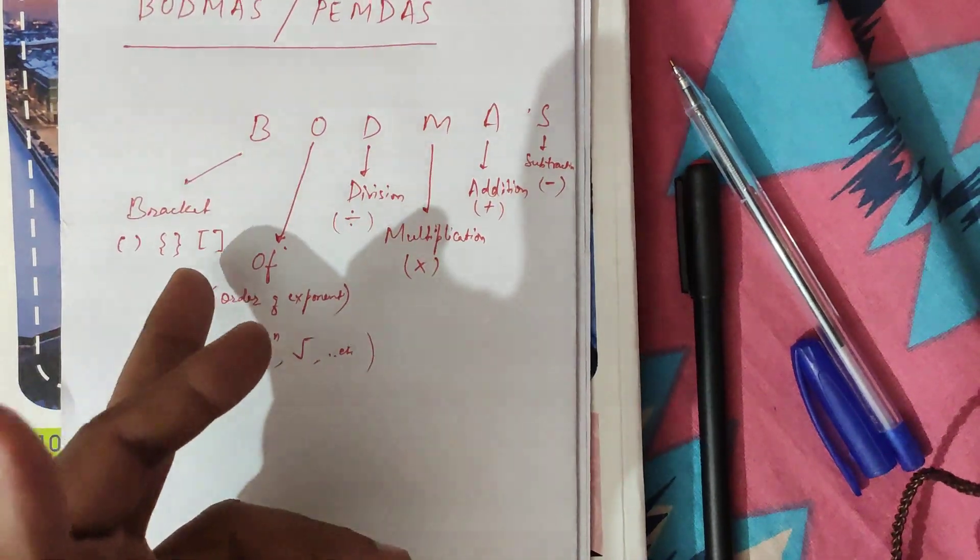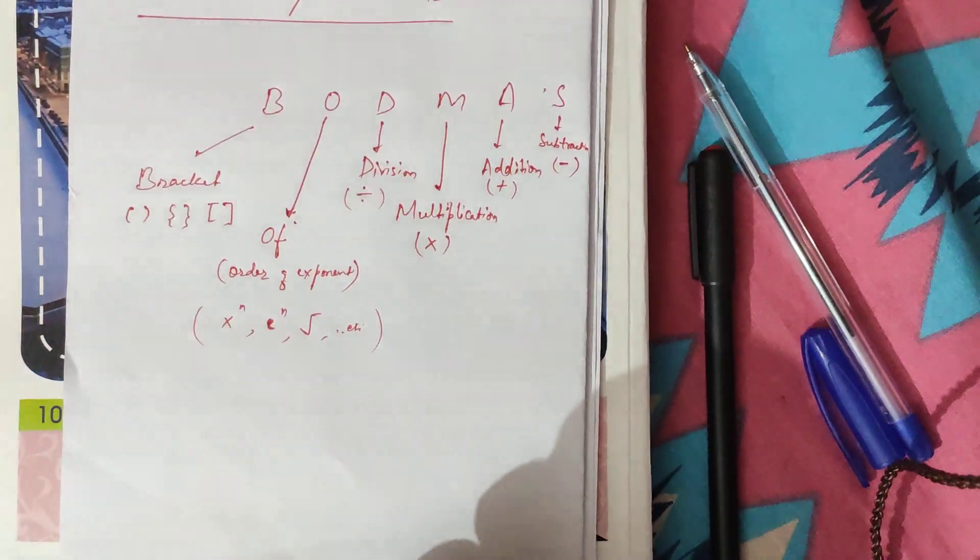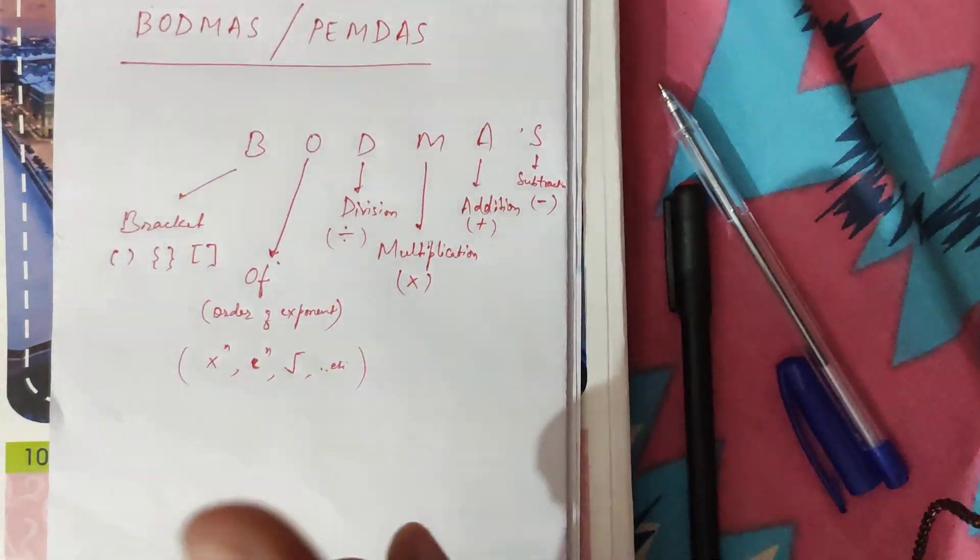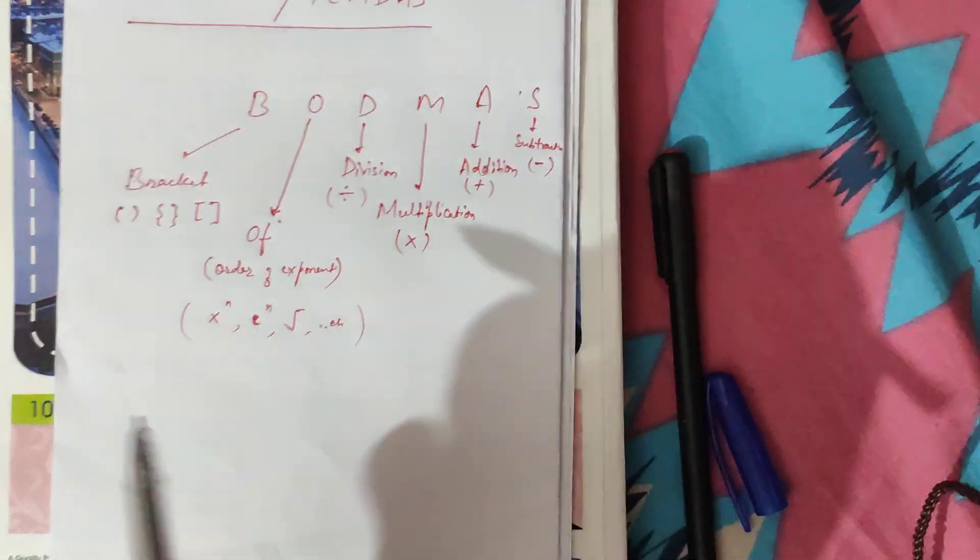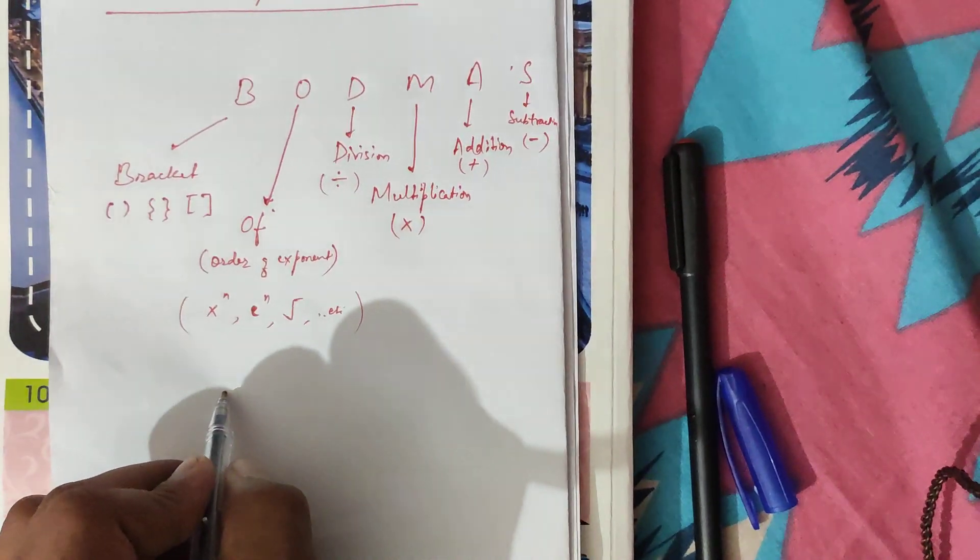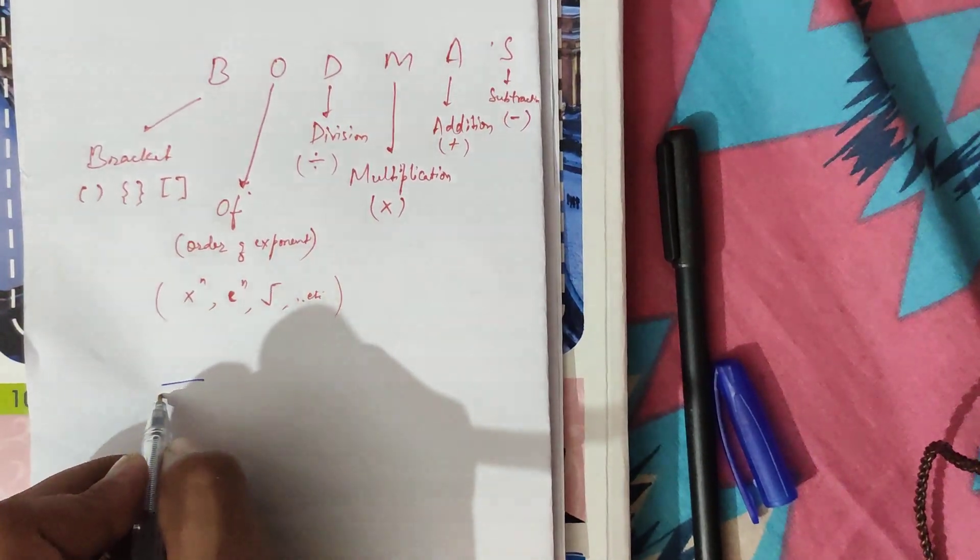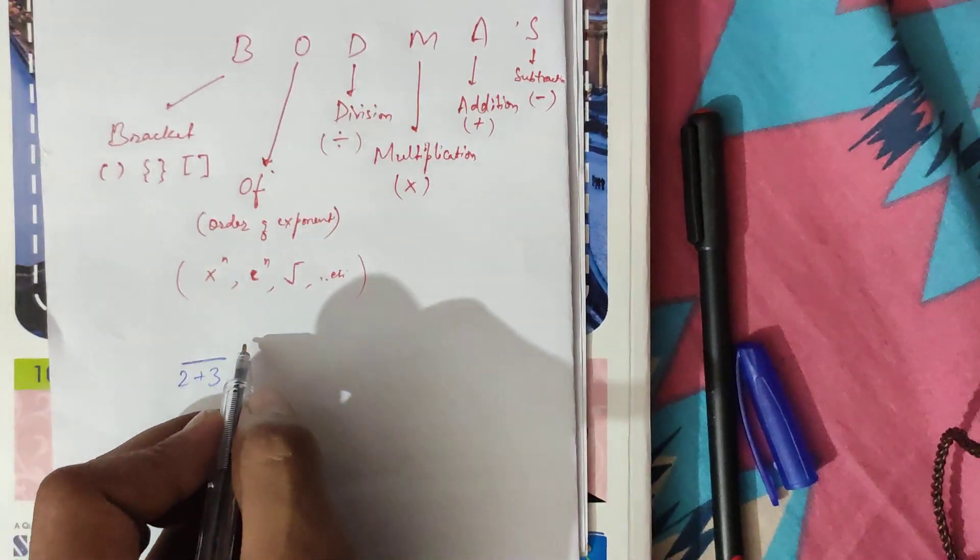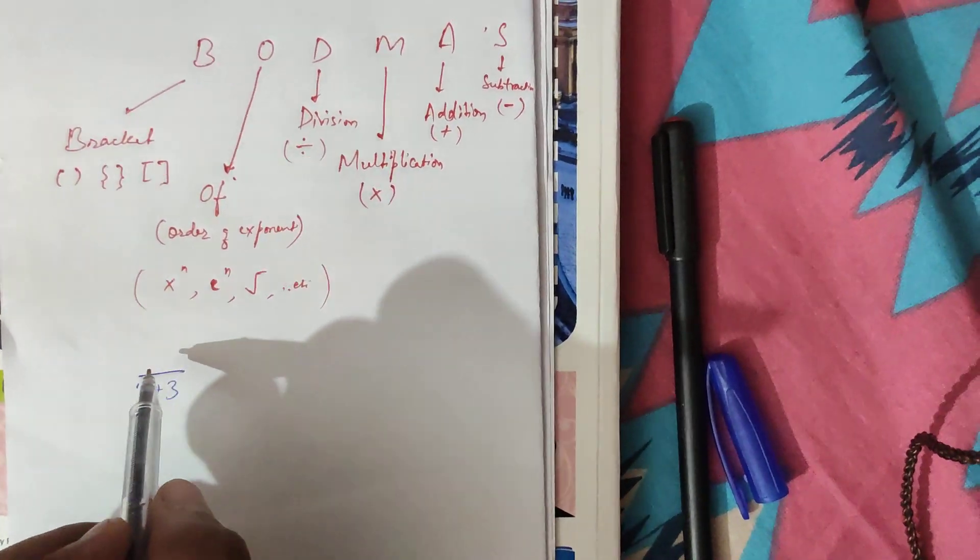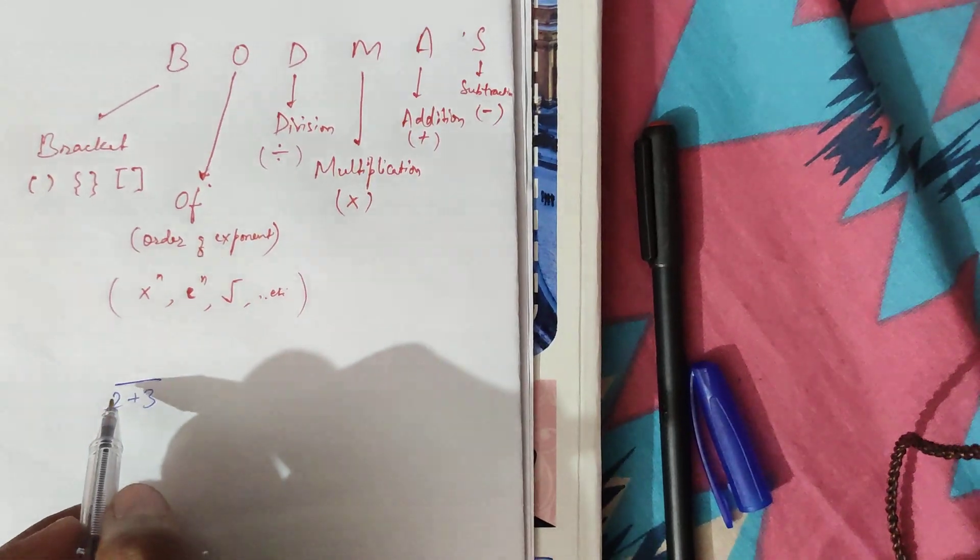A couple of things have to be kept in mind. If there is a bar over any operators, we tackle that first. There will be a bar over some operator such as we are given 2 plus 3, and it is outside the brackets, yet we solve it first because it has a bar over.